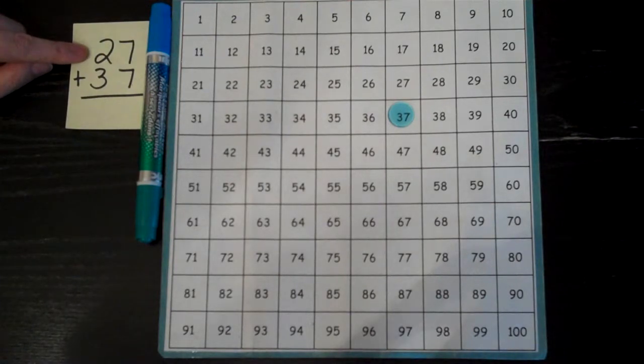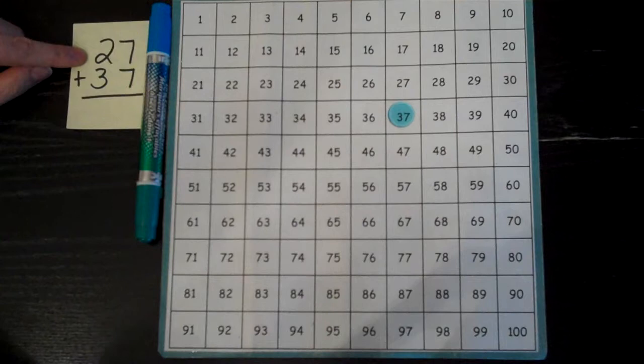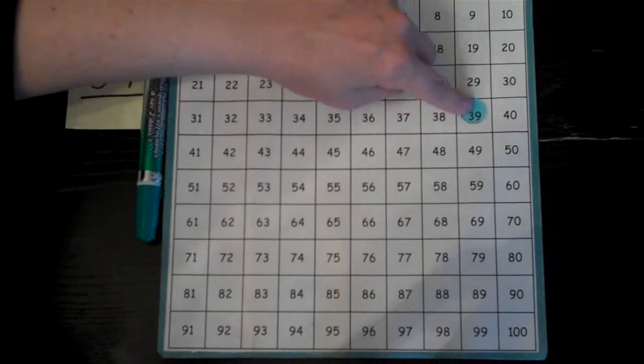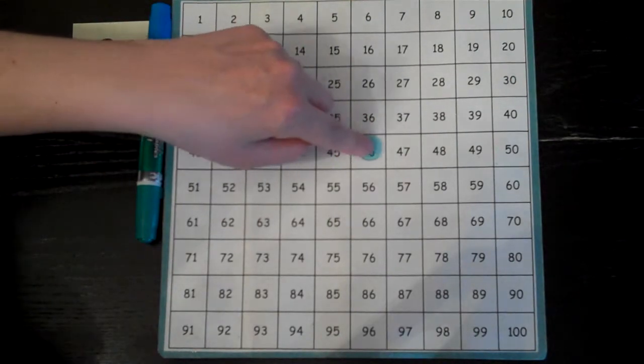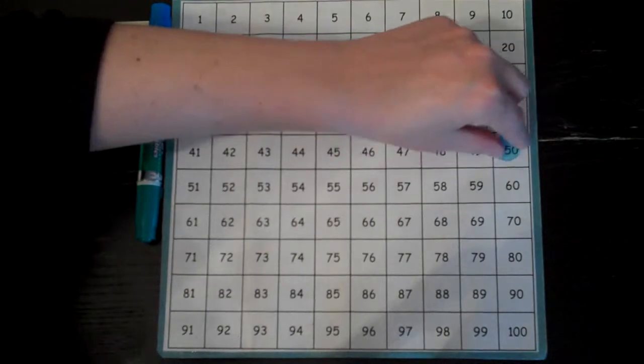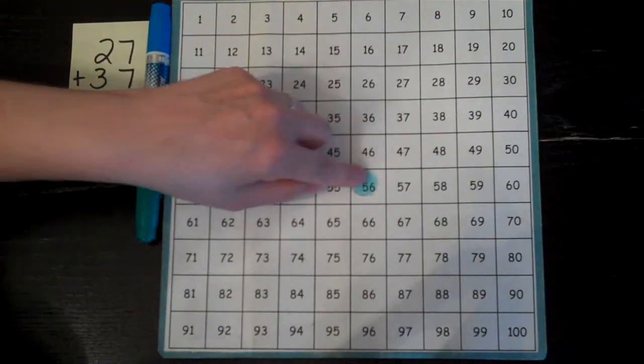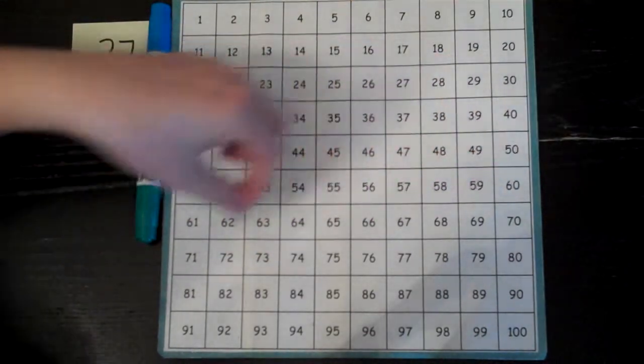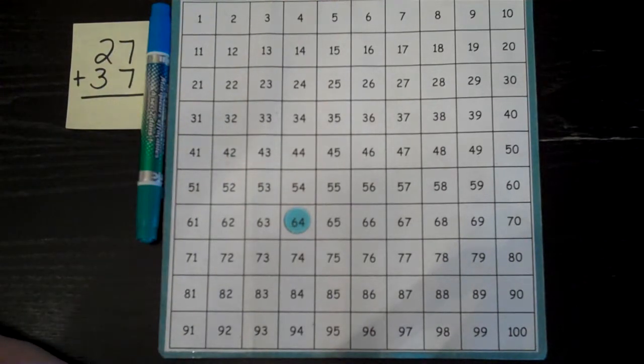Counting 27 times could take a while, so that strategy might not be the fastest, but it will get me the correct answer. Let's try it. Start at 37: 1, 2, 3, 4, 5, 6, 7, 8, 9, 10, 11, 12, 13, 14, 15, 16, 17, 18, 19, 20, 21, 22, 23, 24, 25, 26, 27. I get 64.